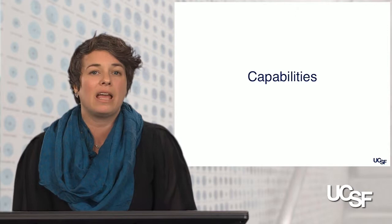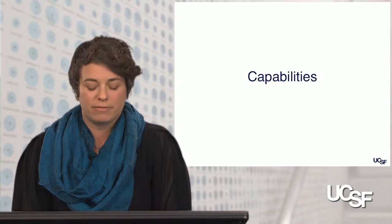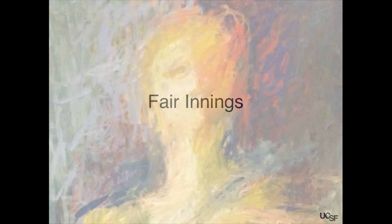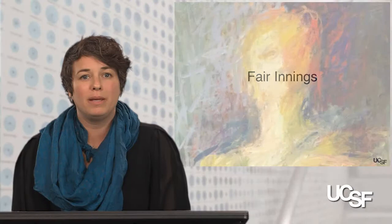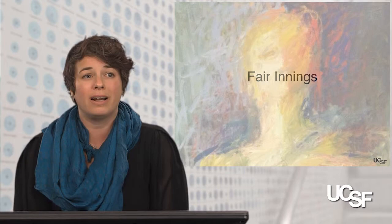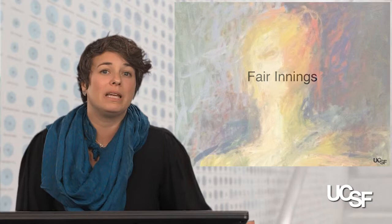Finally, there's a perspective that says life is like a baseball game. People who have just been born are at the top of the first inning, and people in their 80s or 90s are in their ninth inning — at the end of their life, relatively speaking. Everybody should have a go with their fair number of innings, but maybe people in the eighth and ninth inning should forego care or be deprioritized in order to give priority to people at the beginning of the game. So again, that would put children higher on the list and deprioritize older adults.